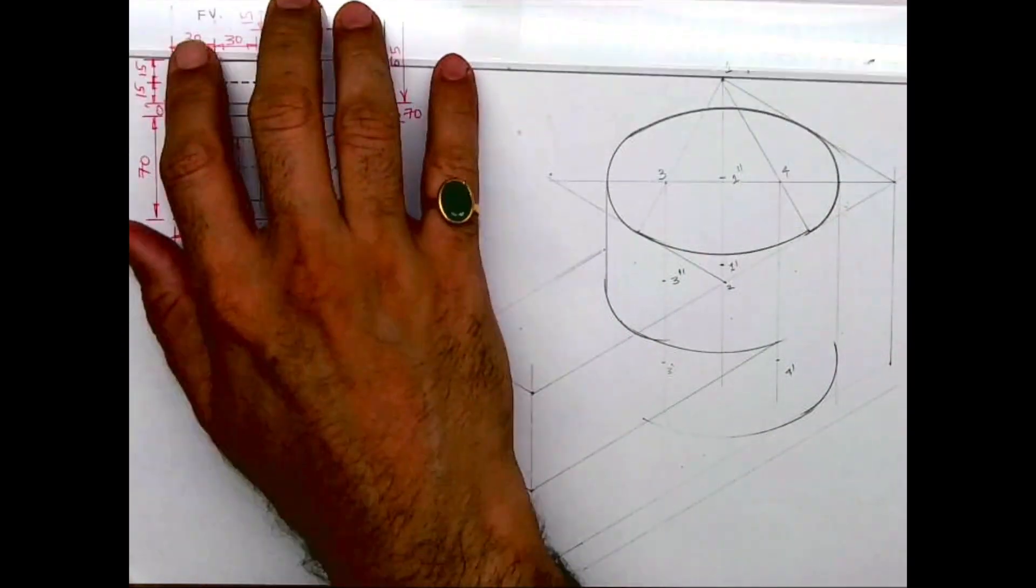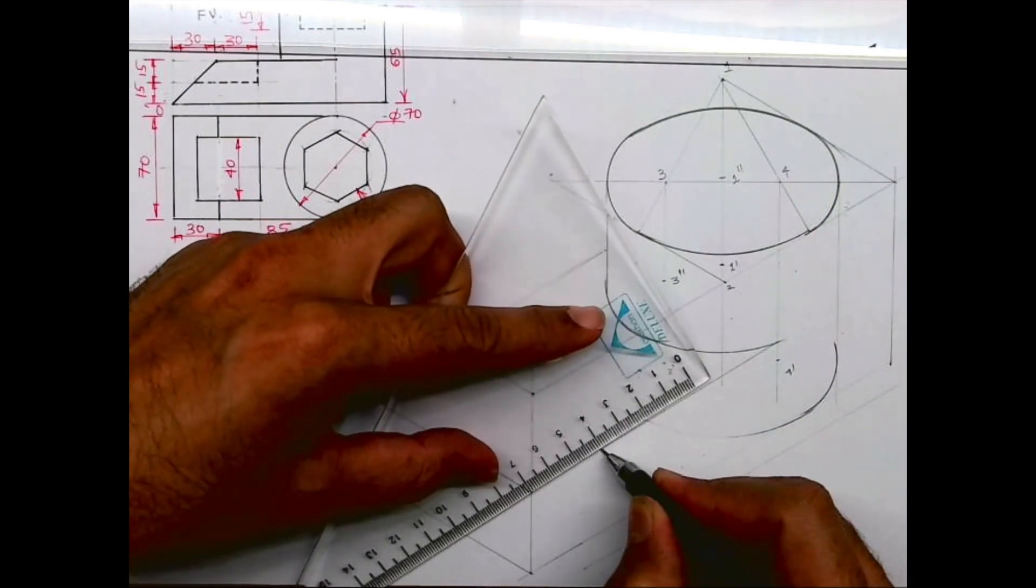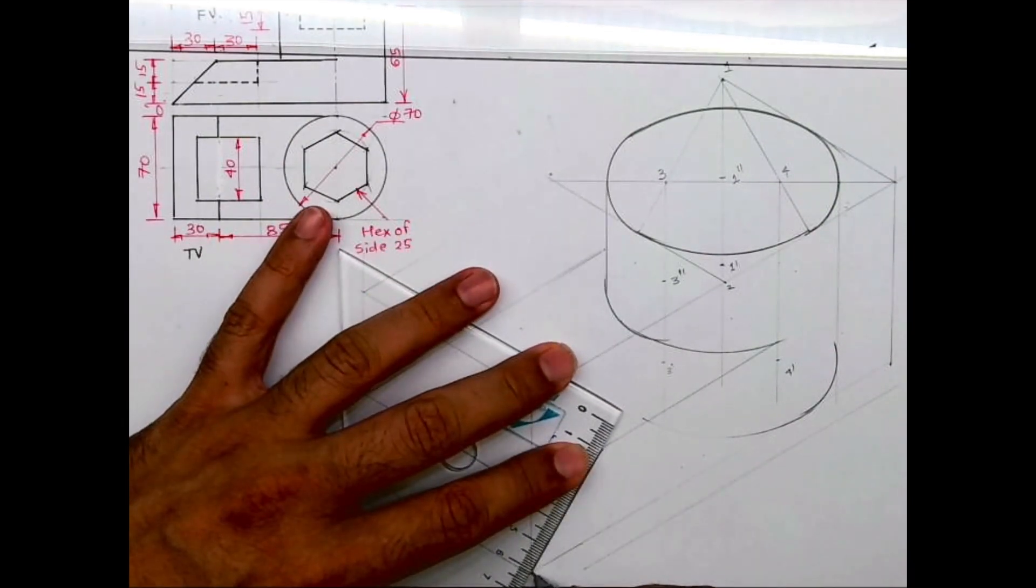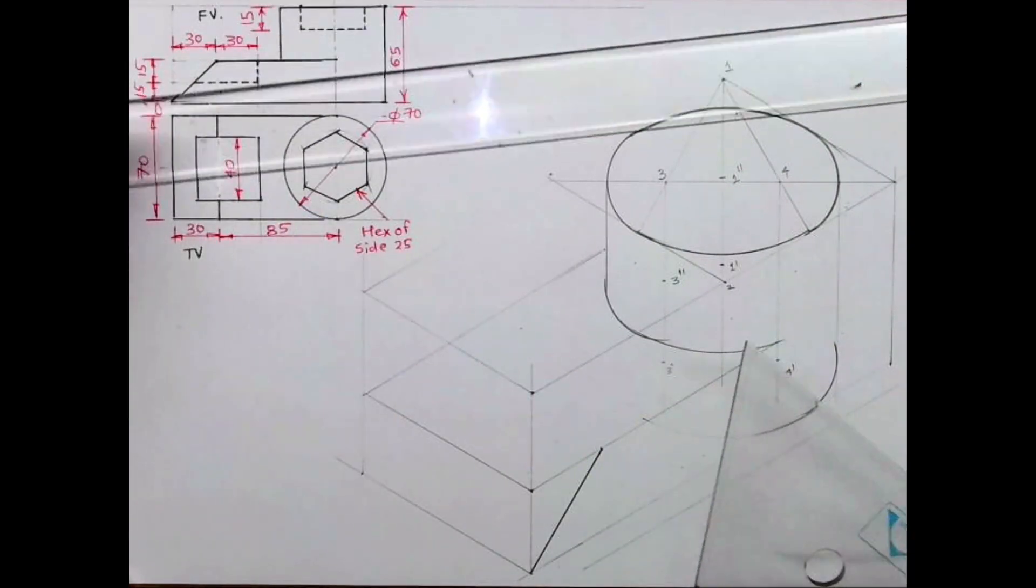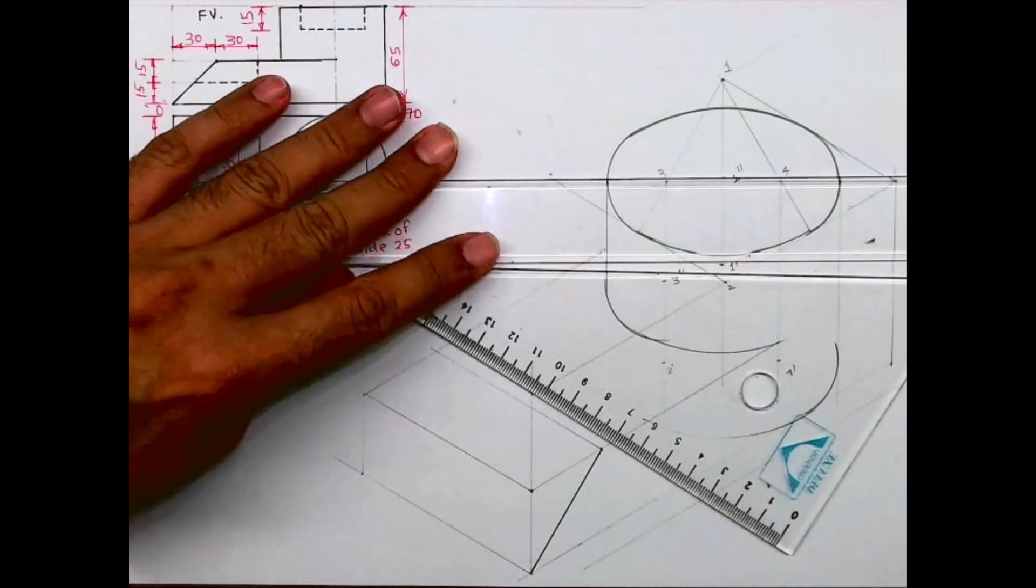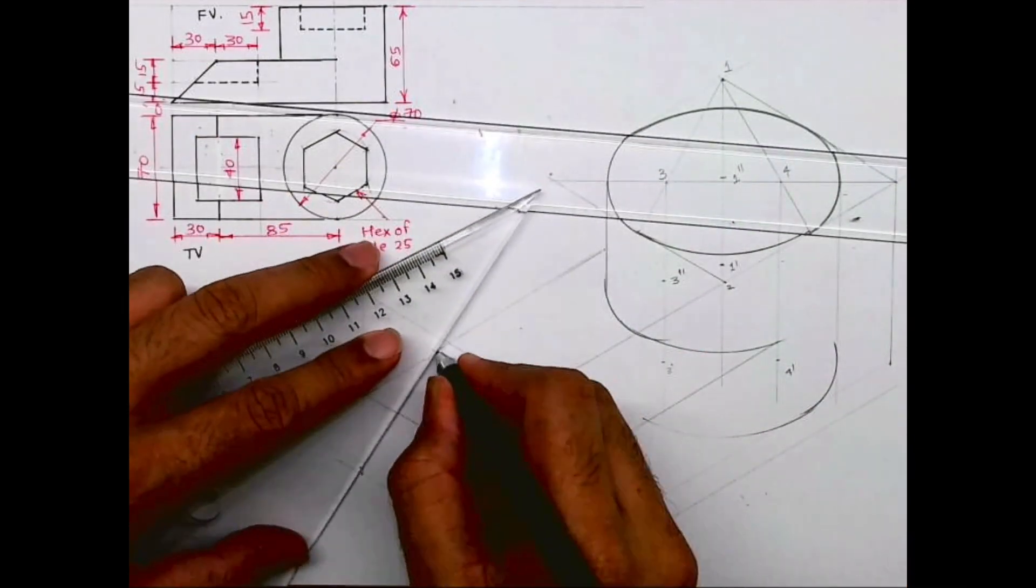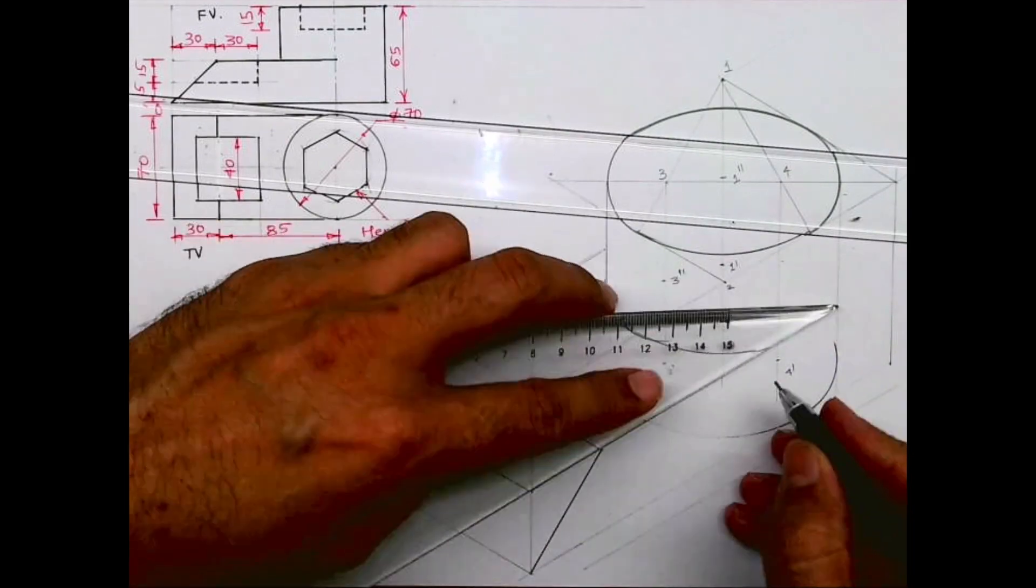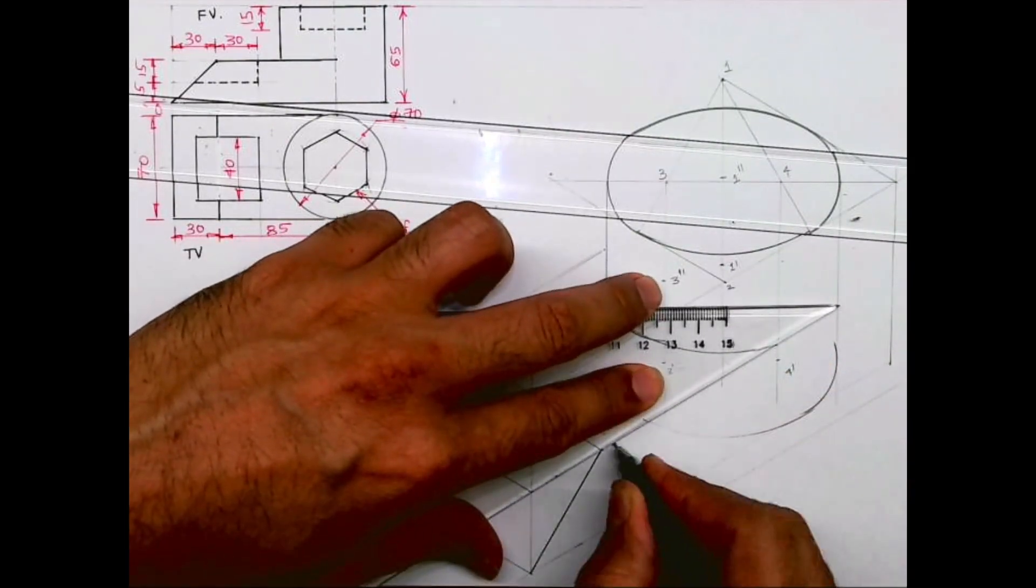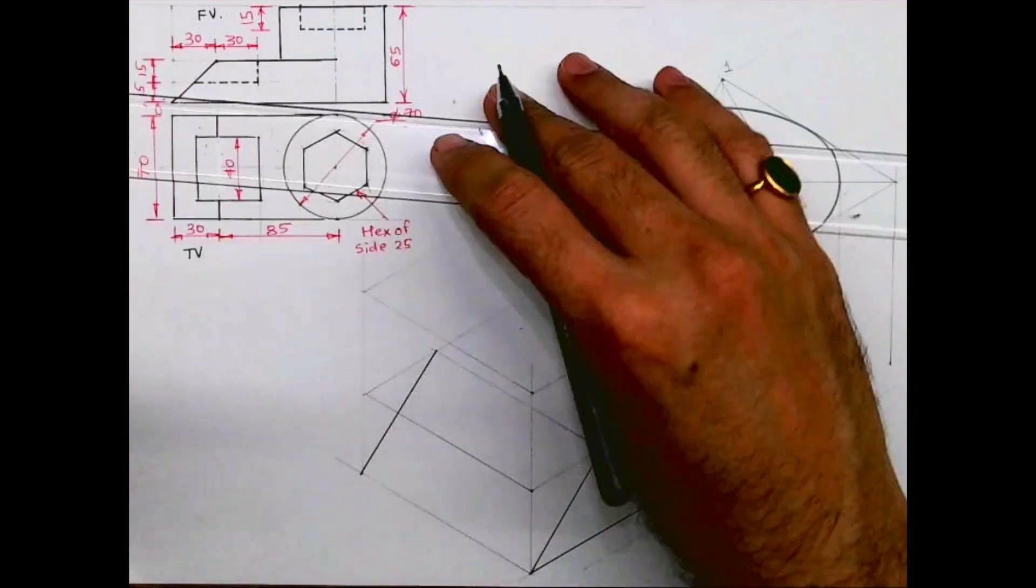Now we'll see this 30, 30. So 30 from here and 30 from here, and we'll join this slope. Now the same slope is behind also, so I'll take this slope behind. I will join like this.